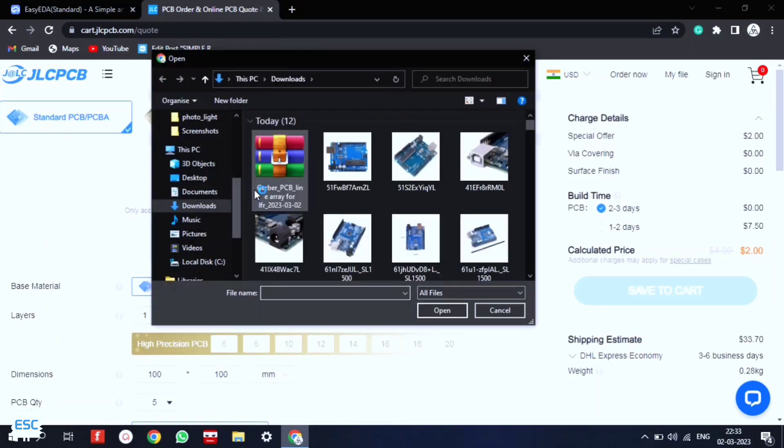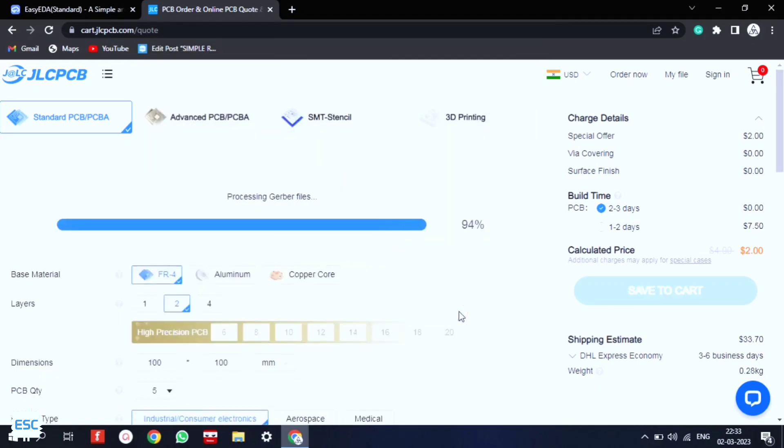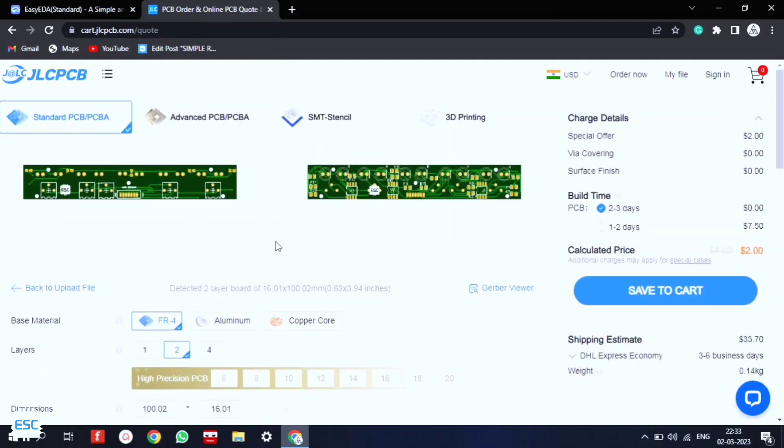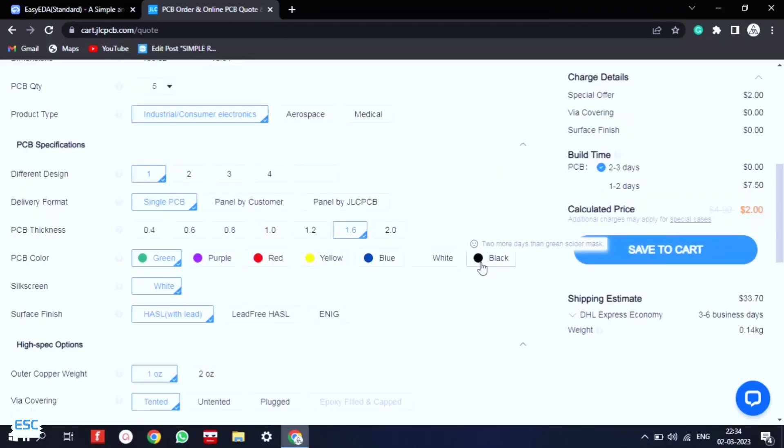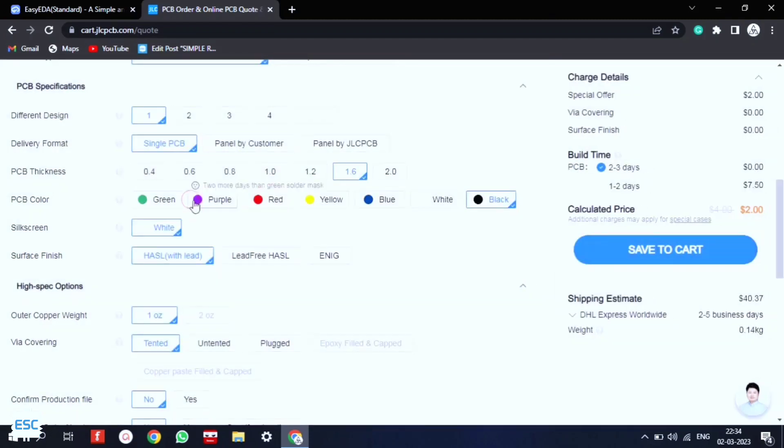Ordering the PCBs in JLCPCB is very easy. Just click on order now, then upload the Gerber file. Now select the quantity, color, and thickness if you want. I chose the black color and selected the shipping method, and finally place the order. That's it.